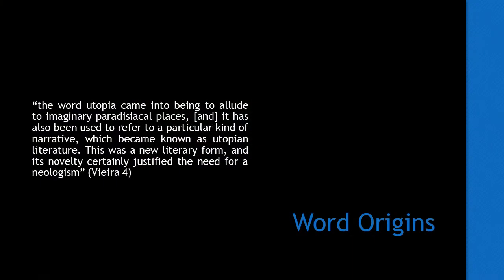A Utopia, broadly speaking, is a place or society in which conditions are ideal — an ideal model of how the world should be and what present-day society should aspire to. The concept itself predated Thomas More's 1516 text Utopia, but it can still be considered a foundational text of the genre. As Fatima Vieira tells us, the word Utopia came into being to allude to imaginary paradisical places and has also been used to describe a particular kind of narrative which became known as Utopian Literature.